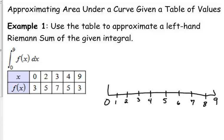So at 0, the y value is 3. At 2, the y value is 5, and I don't have a very accurate picture here. At 3, it is 7. At 4, it goes back down to 5. And at 9, it goes back to 3. So we have a big jump.